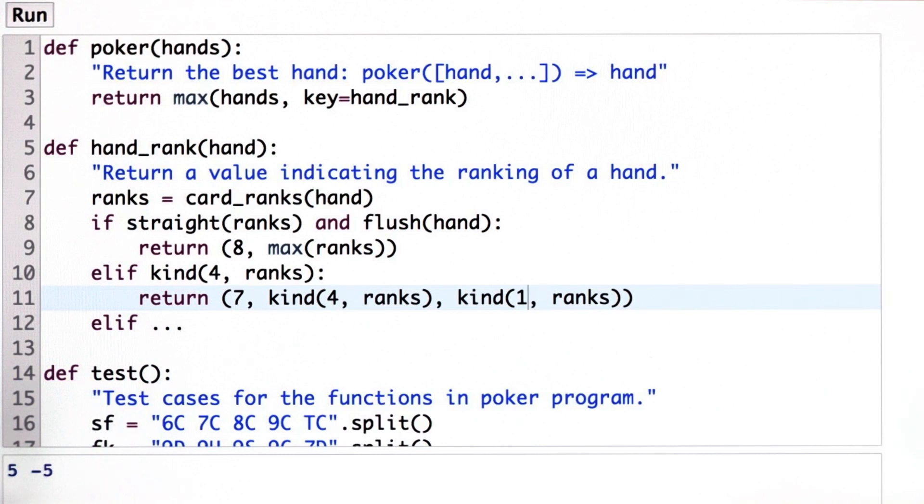Now, one thing you have to worry about is it turns out that in Python, the value 0 is in fact counted as false. So if I was saying I'm going to return either a false value or return a number, and if 0 is one of those possible numbers, then I could be in trouble. But in this case, 0 is not a possible number because the ranks go from 2 to 14, so I'm okay. And we'll see more about that when we define the kind function.